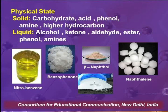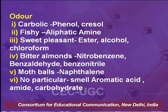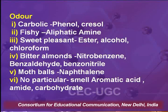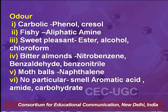Now for odor: specific odors suggest certain compounds. A carbolic or phenol-like smell suggests phenol or cresol. A fishy smell suggests aliphatic amines. A sweet and pleasant smell suggests esters, alcohols, or chloroform. A bitter almond smell suggests nitrobenzene, benzaldehyde, benzonitrile, or nitriles. A moth-ball smell suggests naphthalene. No particular smell suggests aromatic compounds, amides, or carbohydrates. These steps will help you identify the possibility of the compound — note it down immediately.